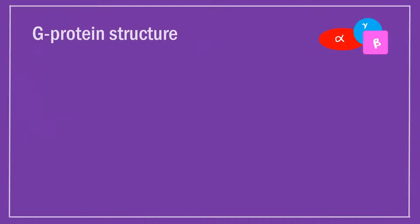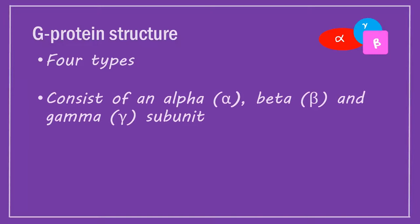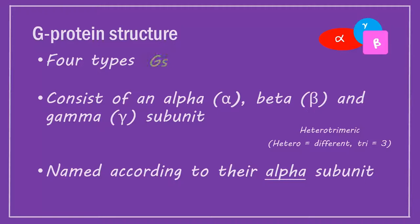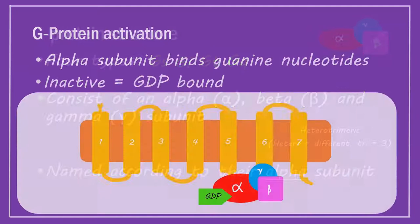G-protein structure. There are four types of G-protein, each consisting of an alpha, beta, and gamma subunit. As such, they are termed heterotrimeric. G-proteins are named based on the specific alpha subunit they contain: Gs, Gi, Gt, or Gq.